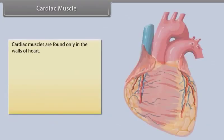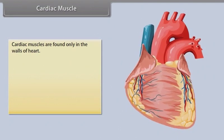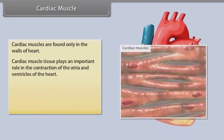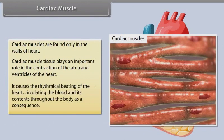Cardiac muscles are found only in the walls of the heart. Cardiac muscle tissue plays an important role in the contraction of the atria and ventricles of the heart. It causes the rhythmical beating of the heart, circulating the blood and its contents throughout the body.